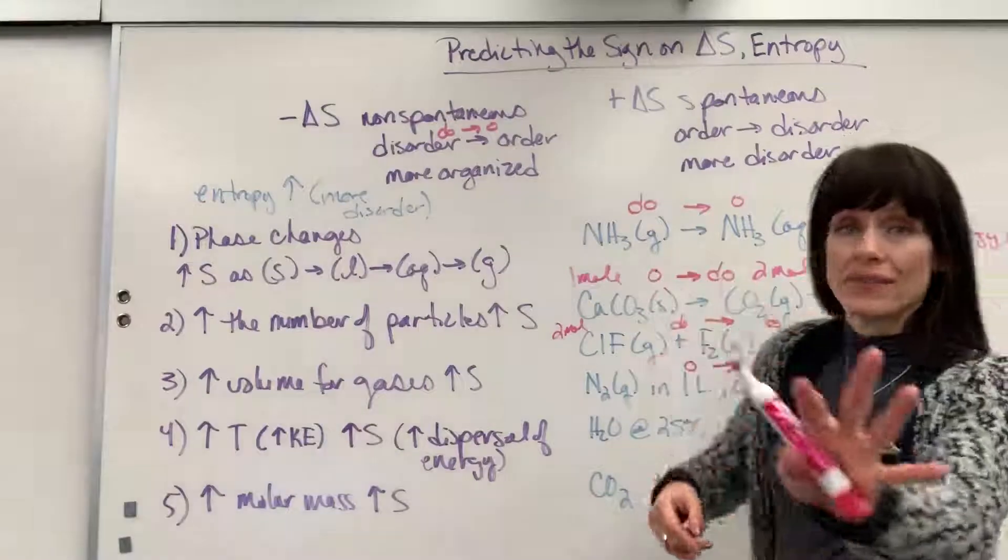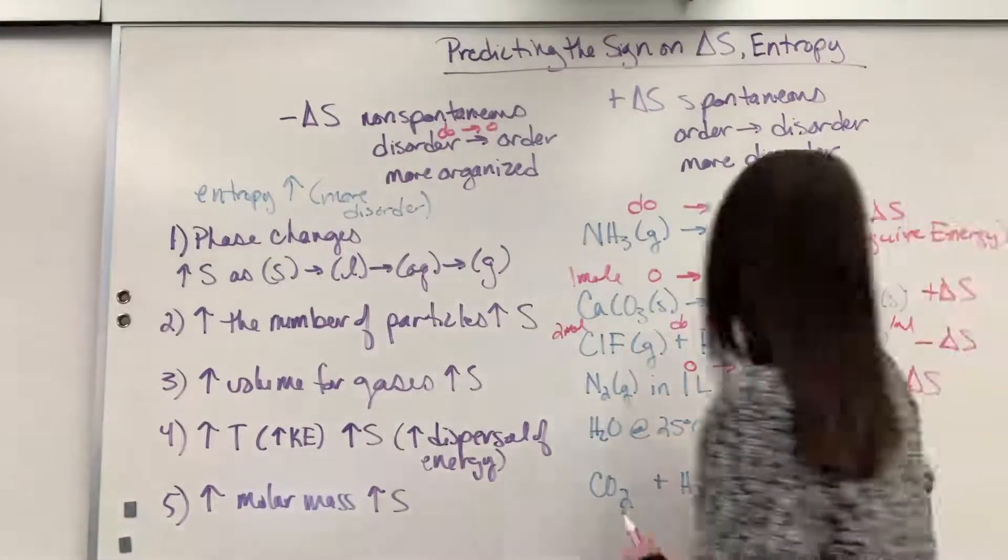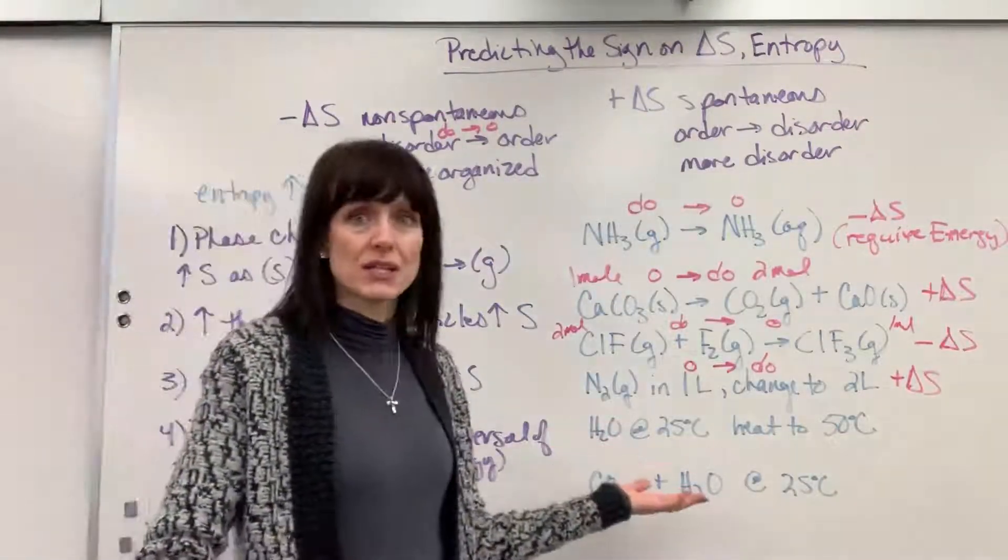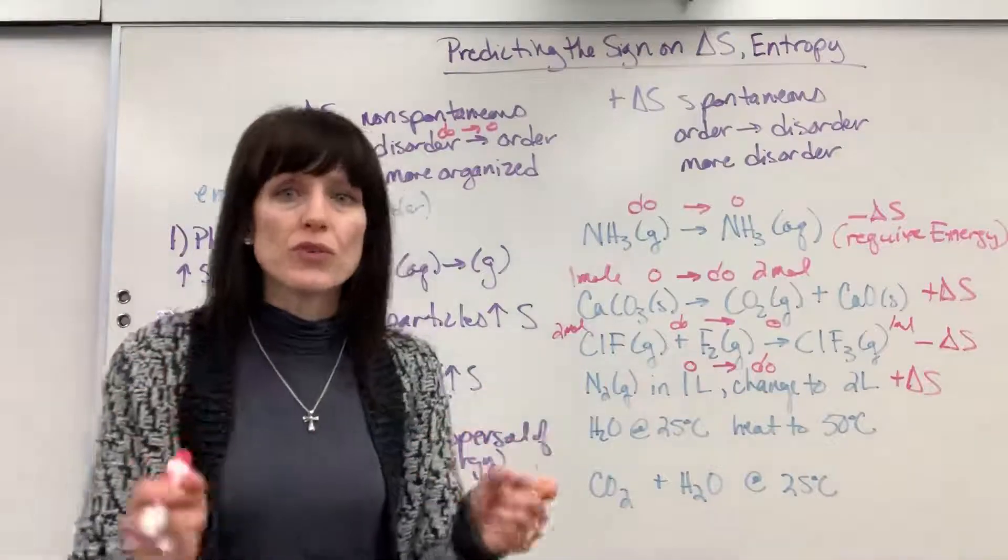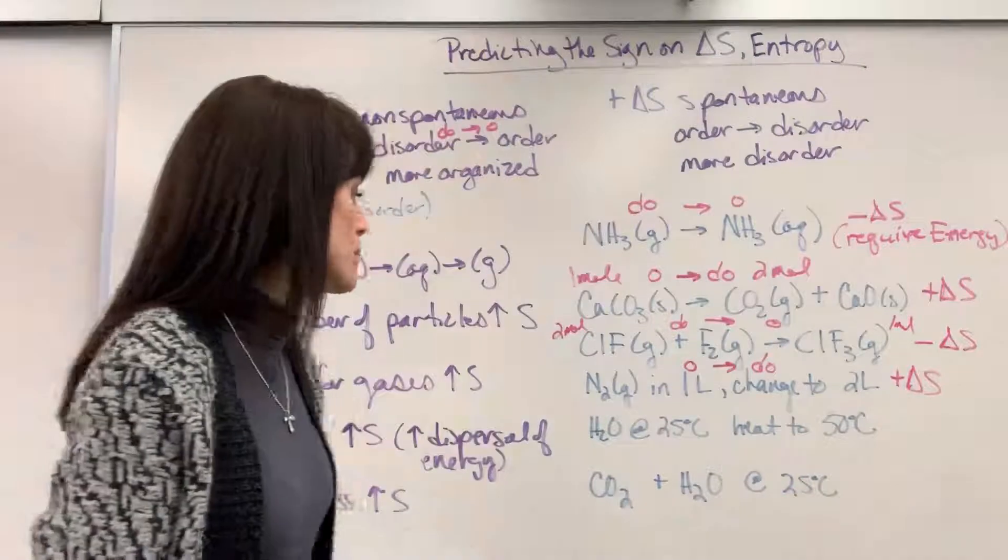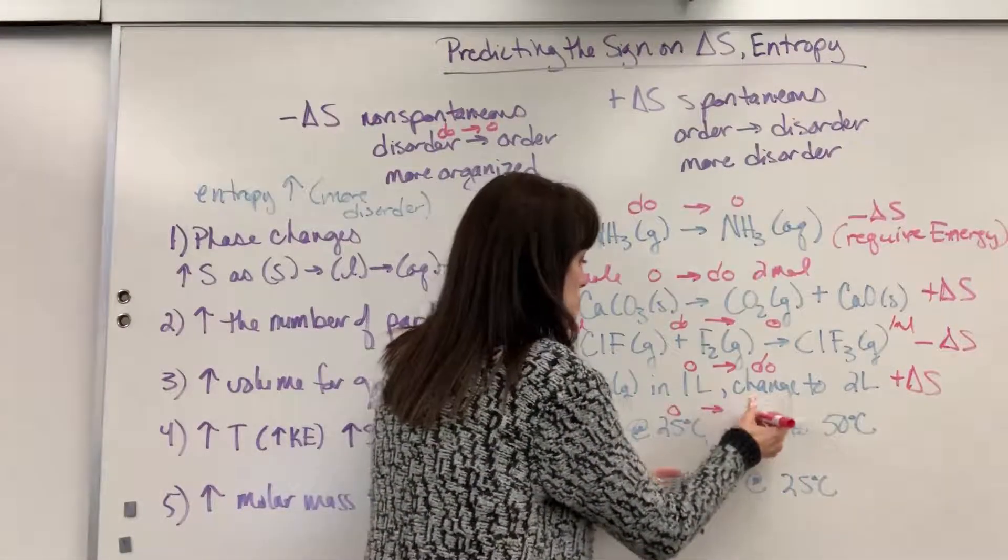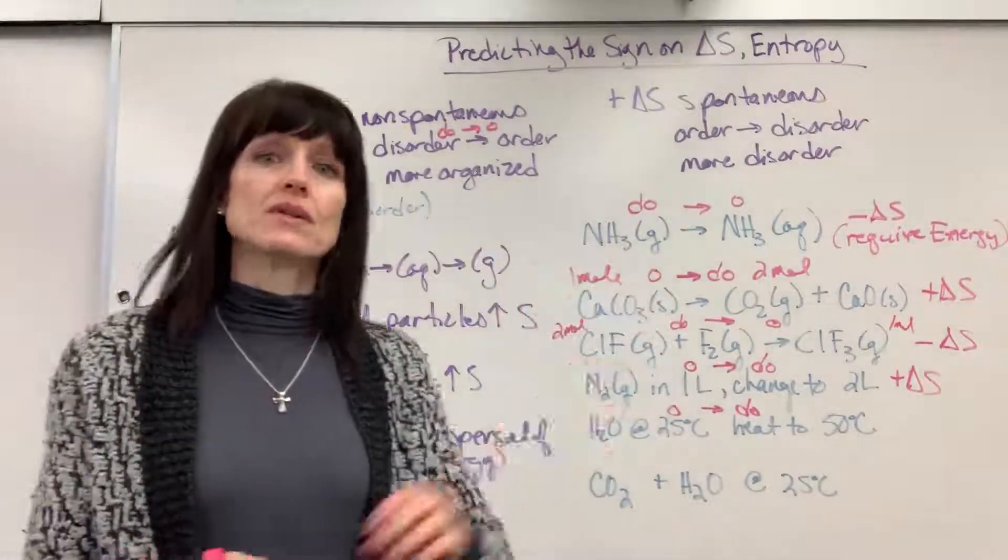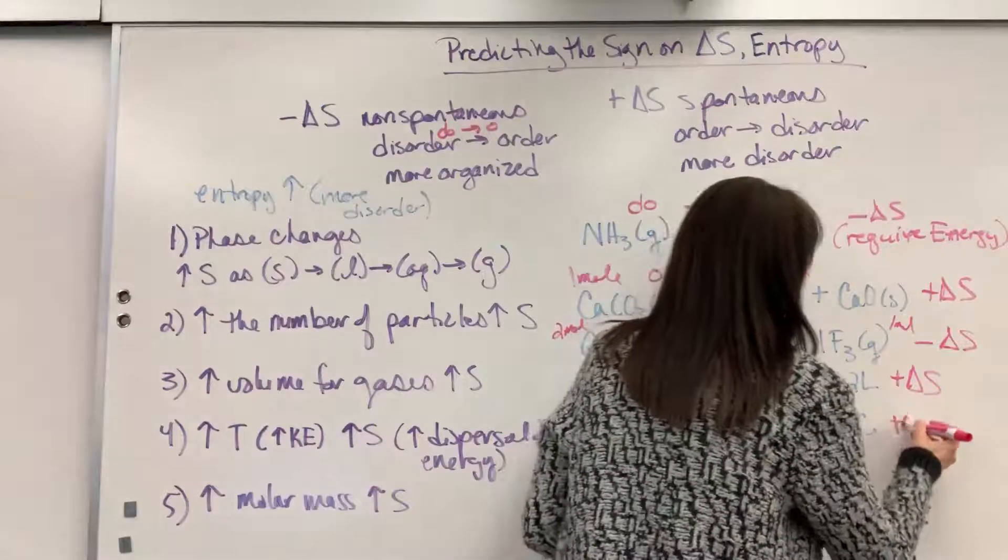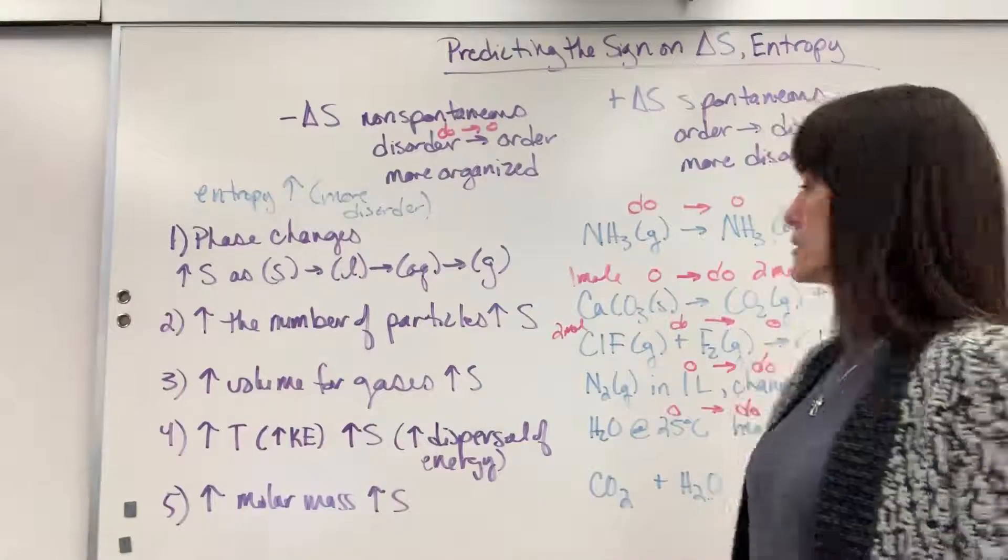So I have an example for you. Let's say that we have water at 25 degrees C. And we're going to heat this to 50 degrees C. So I'm putting energy into this. You're going to have more movement of the molecule. So there's going to be an increase in dispersing this energy. So we're going to end up going from more order to more disorder. And again, order to disorder spontaneously happens. So that's going to be a positive delta S. So increase temperature, increase disorder. That one really makes sense.